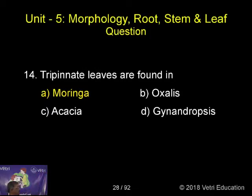Tripinnate leaves are found in Moringa, Oxalis, Acacia, or Gynandropsis? The correct answer is Moringa.